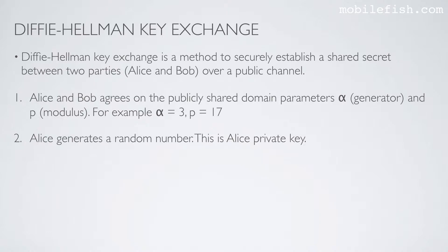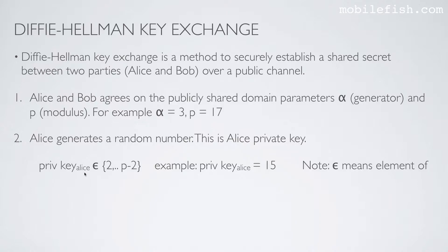Step 2. Alice generates a random number — this is Alice's private key. Alice's private key must be a value in the range between 2 and p-2, for example 15.